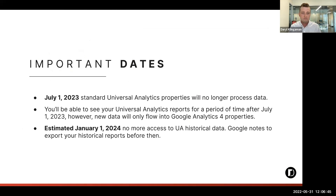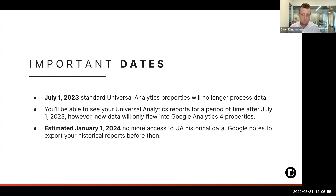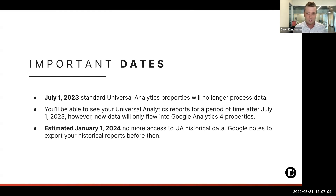This means that the current Google Analytics properties that you have set up will no longer collect and process data as of July 1st, 2023. Google has said that you'll be able to access historical data for some time period at that point — at least six months, with no exact finite end date. But eventually, we'll lose the ability to see that historical data inside our existing analytics properties.